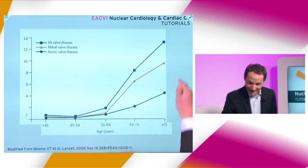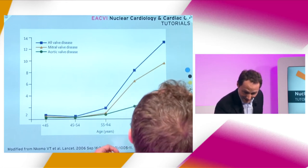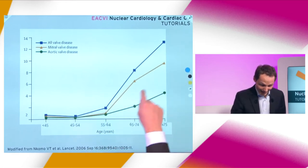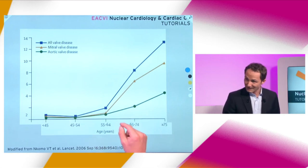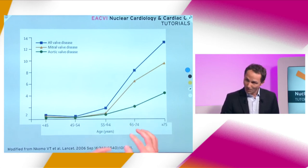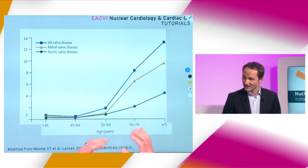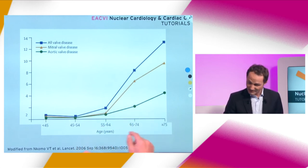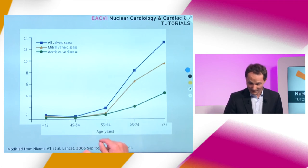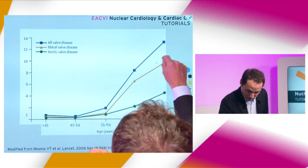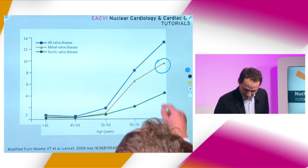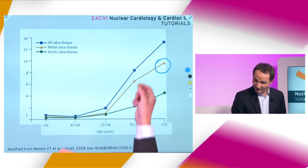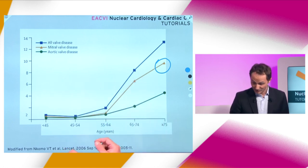What we can see here is that valve disease — and these curves actually depict the prevalence of moderate to severe valve disease — increases very much with increasing age. For native valve disease, for example, at the age of 75 we have a prevalence of around 10 percent.